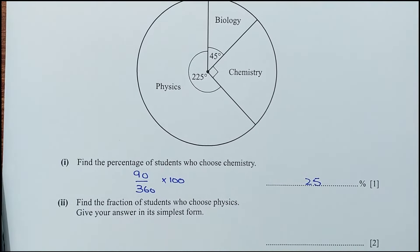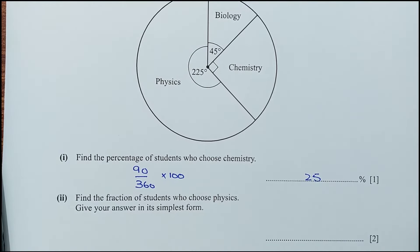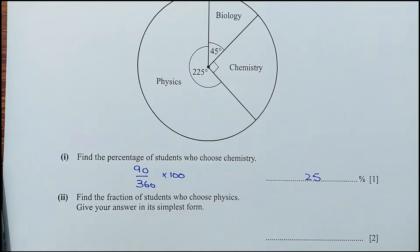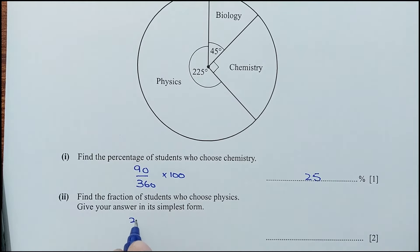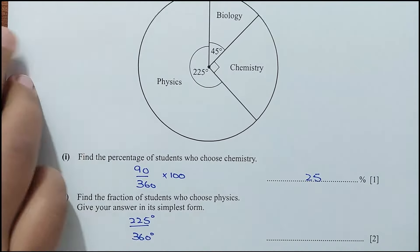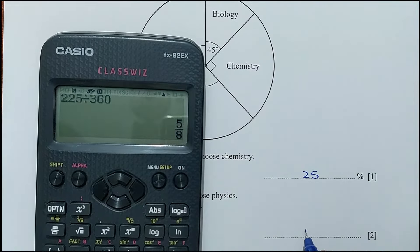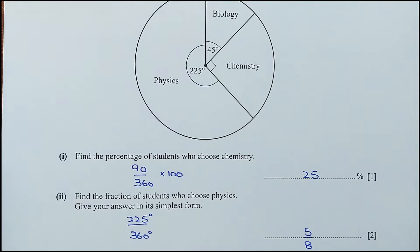For part 2, find the fraction of students who chose physics. Give your answer in its simplest form. Physics is 225 degrees out of 360 degrees. So 225 divided by 360 simplifies to 5 over 8 in its simplest form.